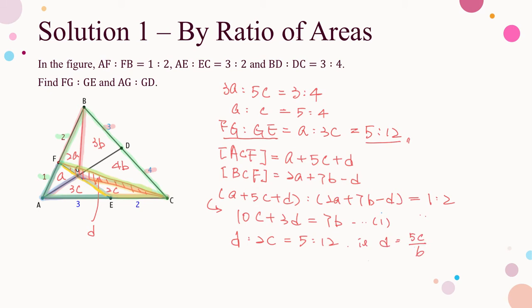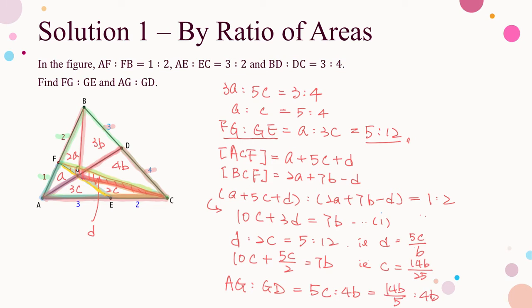Substituting D into equation 1, we get C equals 14B over 25. Now, AG to GD equals area of AGC to area of DGC, that is 5C to 4B. Substituting the result gives 7 to 10 — the answer of the second ratio.